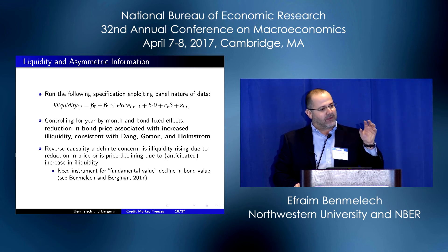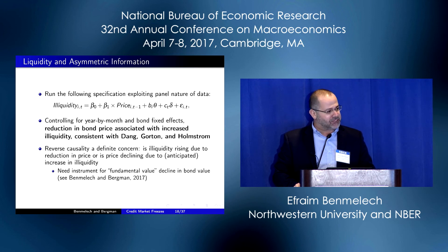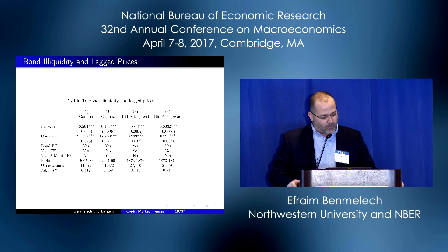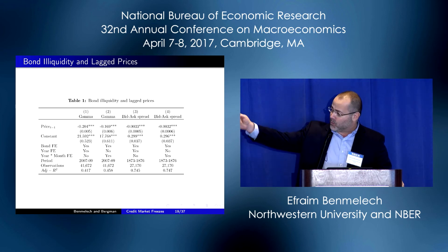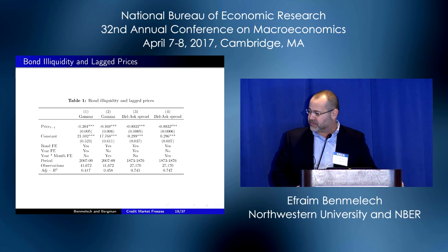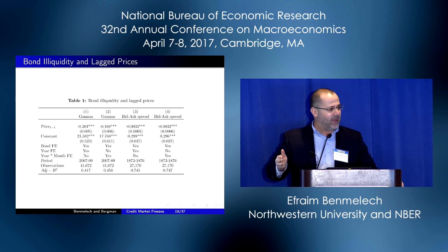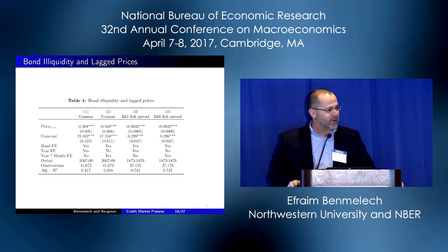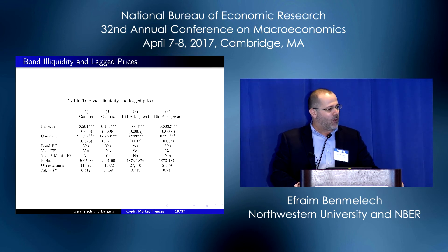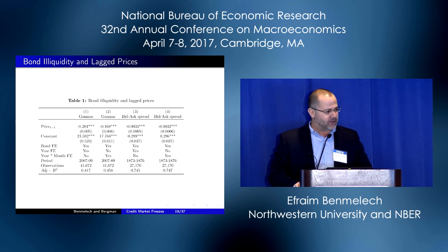We do a battery of tests that establish, in our opinion, the causal relationship between prices and liquidity. What do we find? As you saw from the graphs, when you run a measure of illiquidity — whether it's the gamma measure for the 07-09 crisis or the bid-ask spread for the 1873 crisis — there is a negative relationship between price and illiquidity. This negative relationship survives when you control for bond fixed effects and year-by-month fixed effects. In our more micro-oriented paper, we do everything we can to show that this relationship is indeed causal.